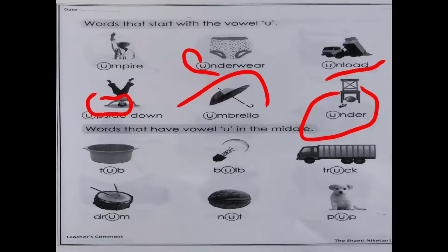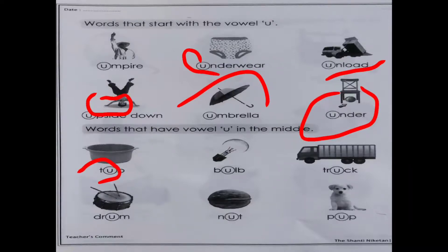Next wali pictures mein dekhenge, beta, jahaan pe jo U ka sound hota hai, woh beech mein aata hai. So first picture kiski? T, u, b - tub. Next picture is B, u, l, b - bulb.